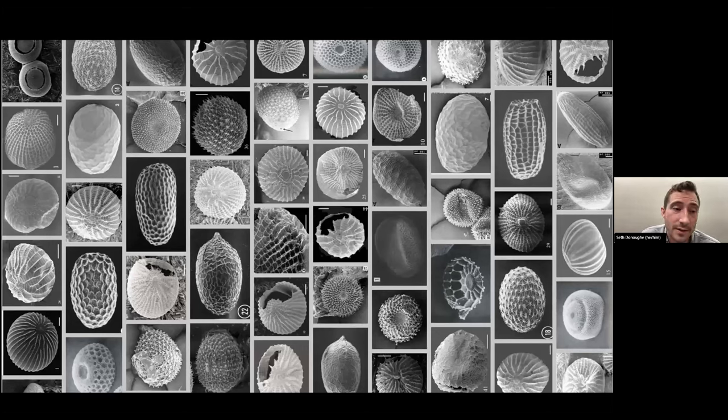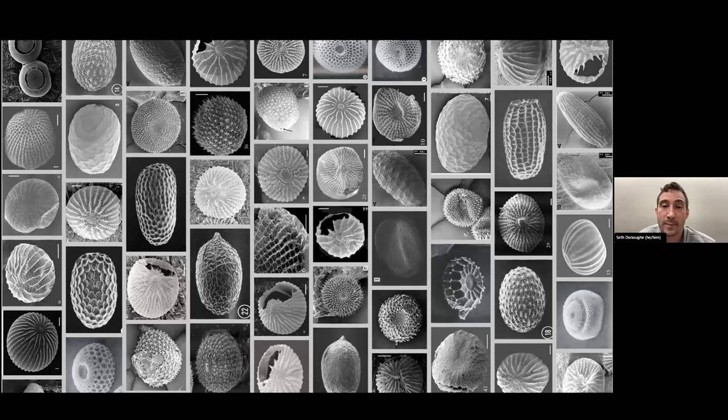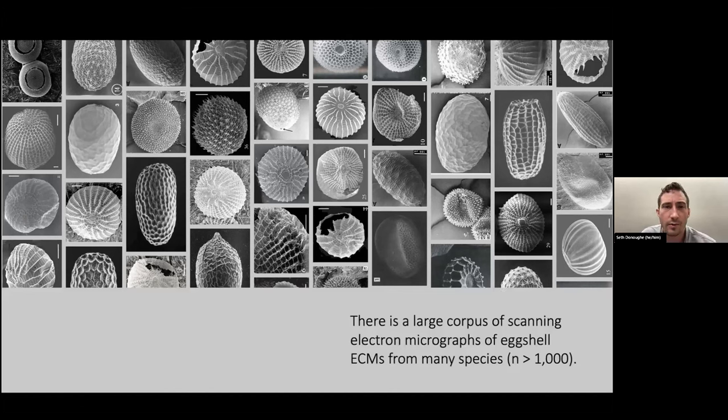What I'm showing you here is a subset of a large dataset I've put together from the published literature. This was inspired by work I did during my PhD in the lab of Cassandra. These are all scanning electron micrographs of eggs. They have all these different variations on their surface texture. Entomologists think that a lot of these variations have to do with those ecological pressures I mentioned earlier—parasitoids, predators, and changing environmental conditions. So I can take this large corpus of scanning electron micrographs of the eggshell ECM from lots of species and treat it as a dataset.